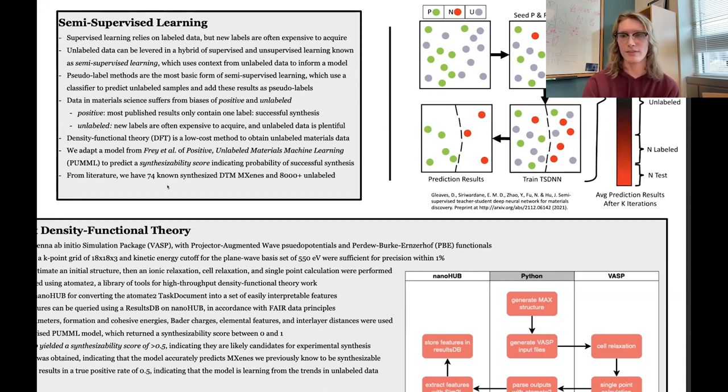This means we have to implement a framework, which we've adopted from Frey et al., called Positive Unlabeled Materials Machine Learning (PUML). We use this to predict how confident we are that any given MXene can be synthesized. We predict a score between 0 and 1.